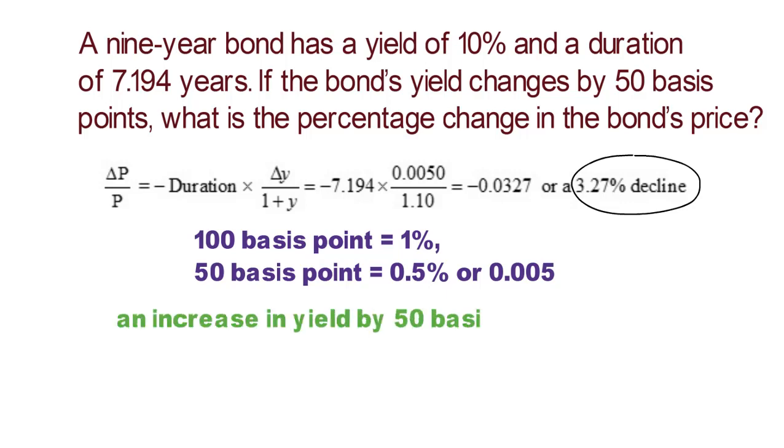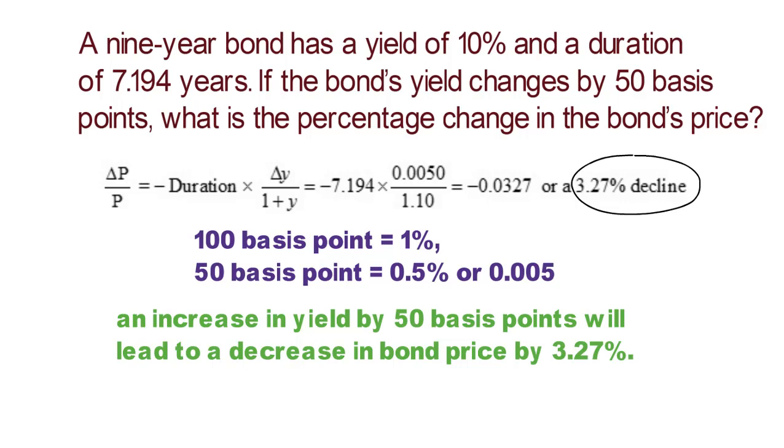In summary, an increase in yield by 50 basis points will lead to a decrease in bond price by 3.27%. Thank you.